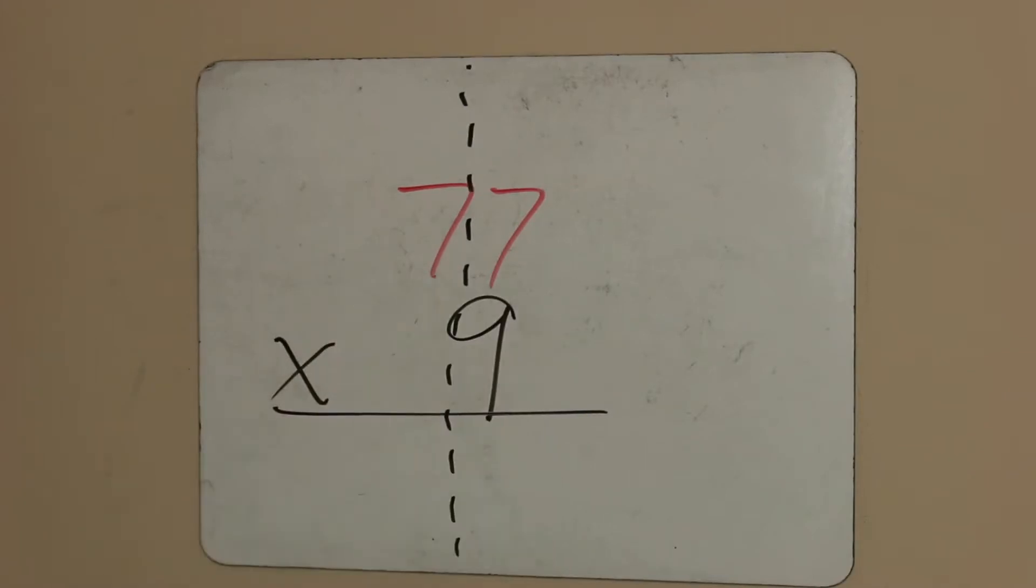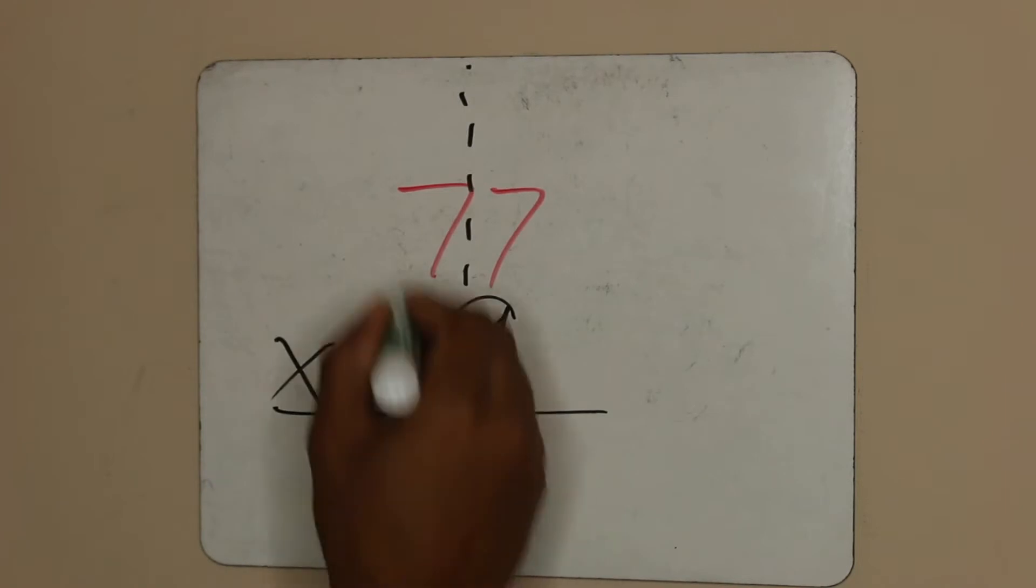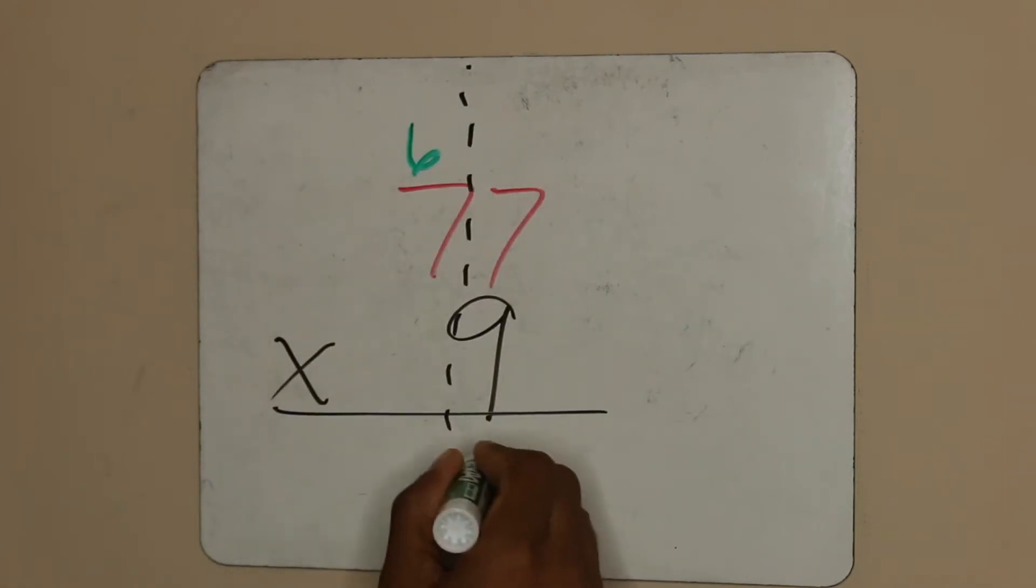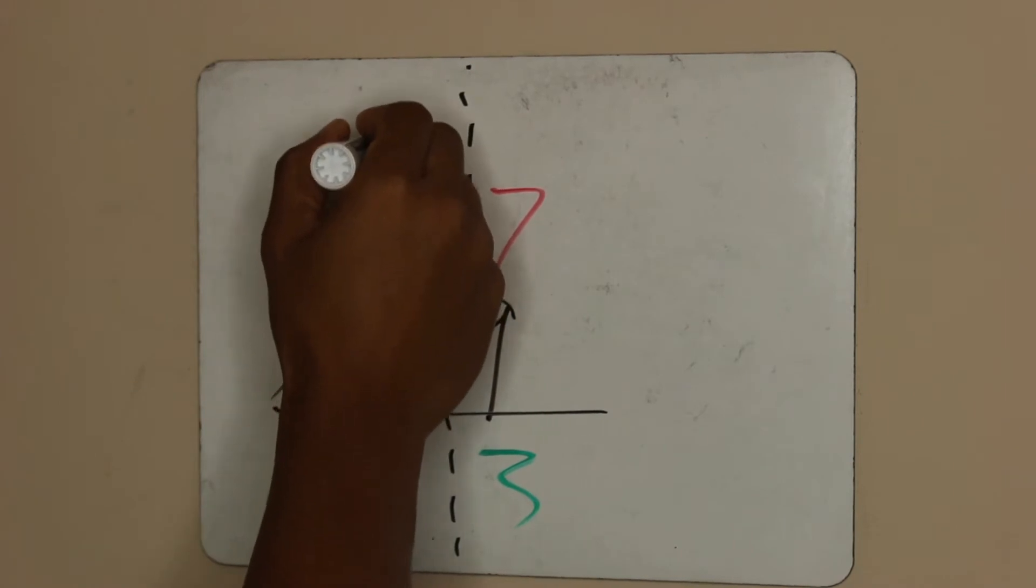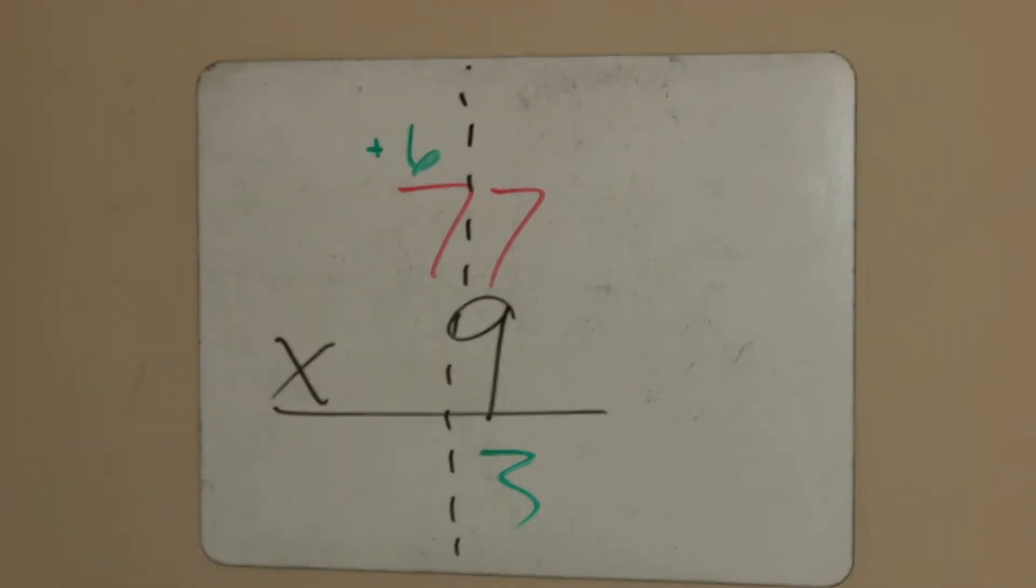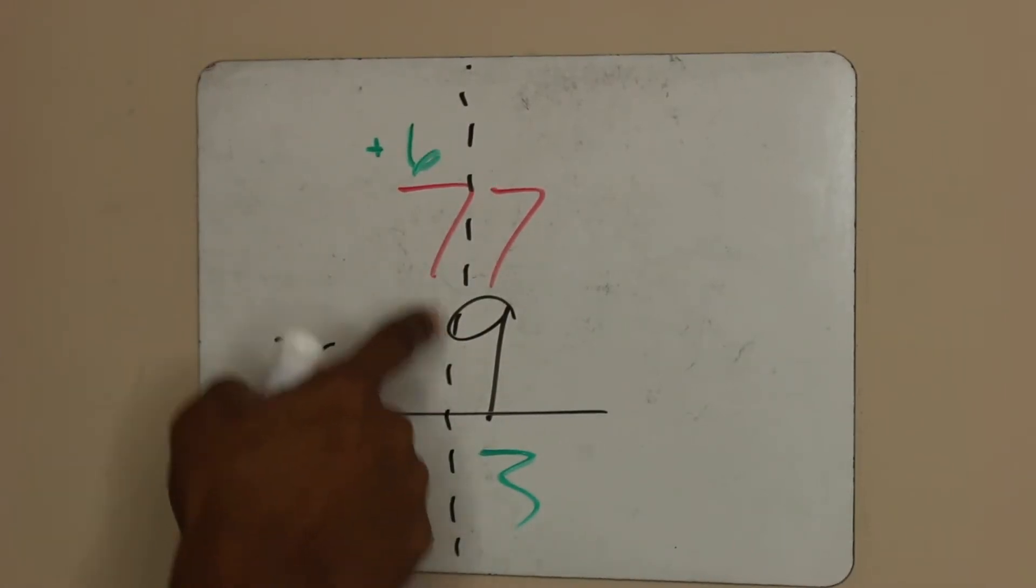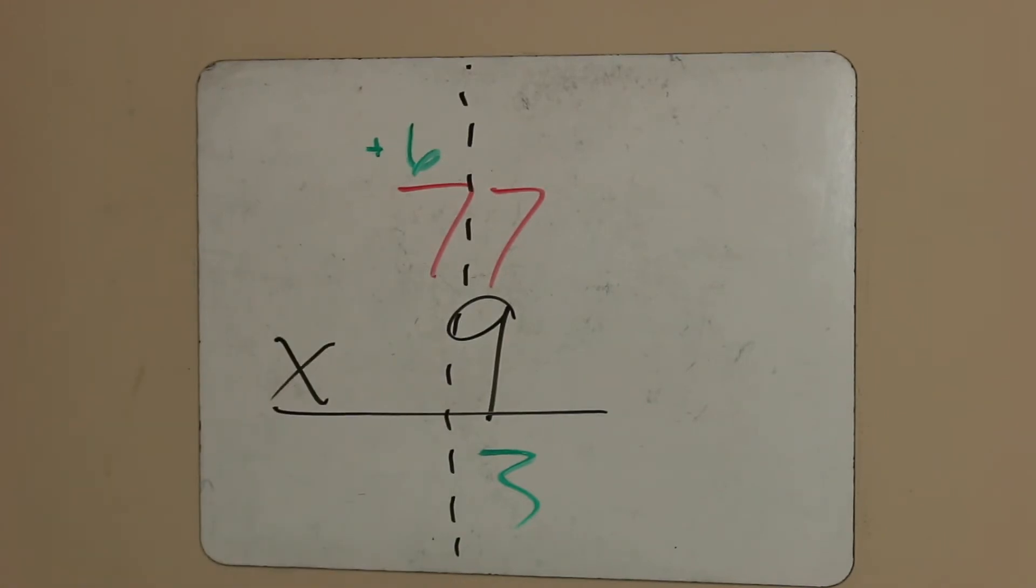Seven times nine is 63. I can't write 63 here, but I can write the 3 here and regroup the 6. What does that six mean? It means you're going to add six to this when you're done. So nine times seven is another 63 plus six is 69.